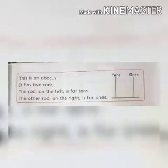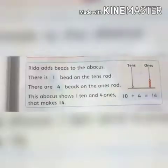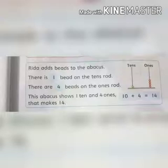On page number 19, read: This is an abacus. It has two rods. The rod on the left is for tens. The other rod on the right is for ones. Rida adds beads to the abacus. There is one bead on the tens rod and there are four beads on the ones rod. This abacus shows one ten and four ones, that makes fourteen. So ten plus four equals fourteen.